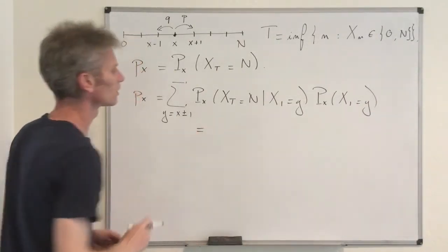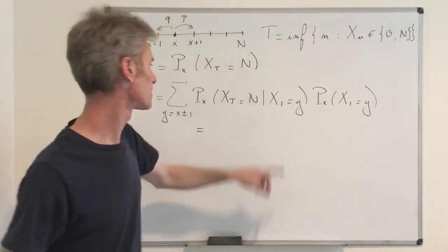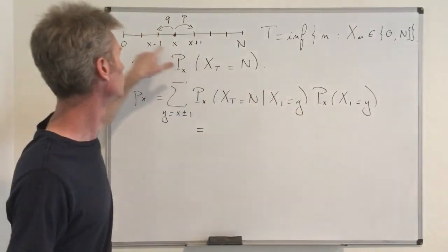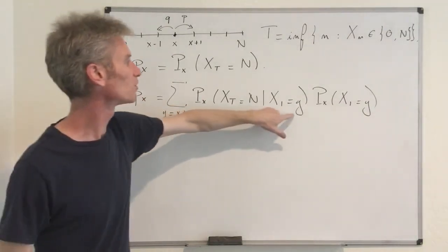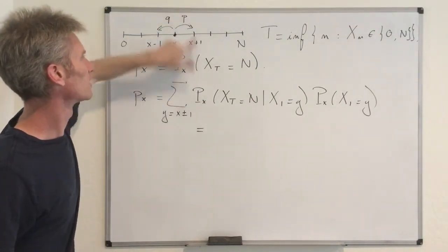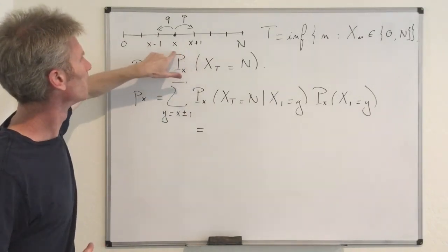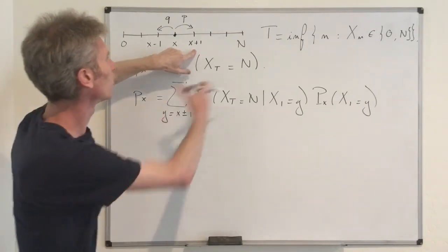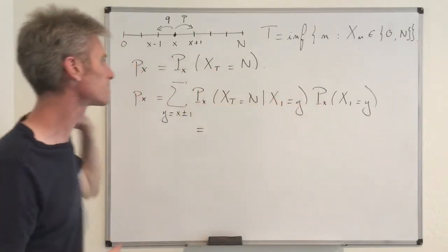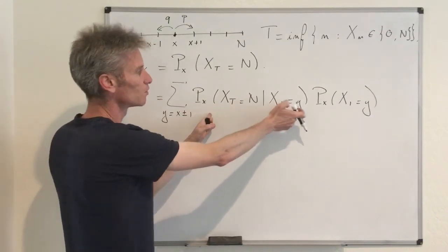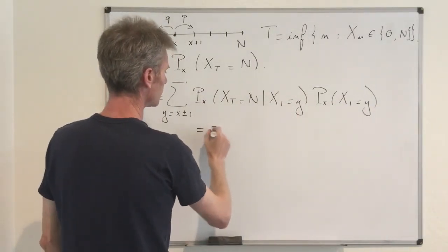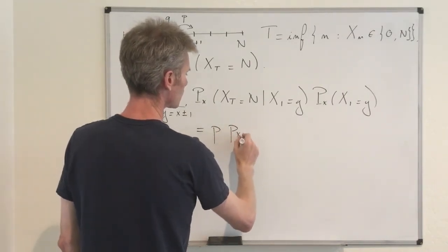Writing this more explicitly: the transition probabilities for Y equals X+1 or X-1 are just P or Q. Using a restart argument — given the gambler wins the first game, her fortune at time 1 is X+1, and the probability of reaching target N before 0 becomes P_{X+1} — we obtain that P_X equals P times P_{X+1} plus Q times P_{X-1}. The interpretation is: with probability P she has X+1 dollars next step, giving winning probability P_{X+1}, and with probability Q she has X-1 dollars, giving winning probability P_{X-1}.